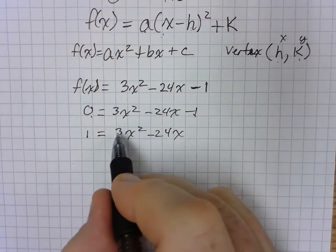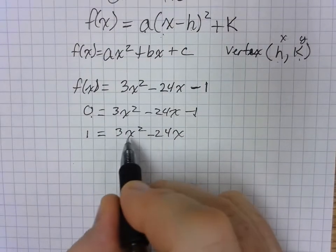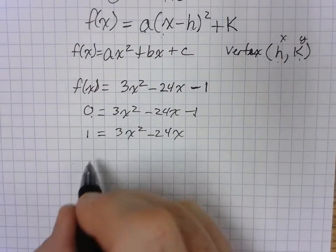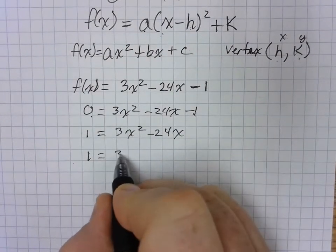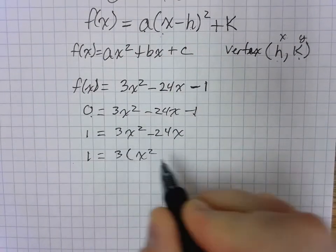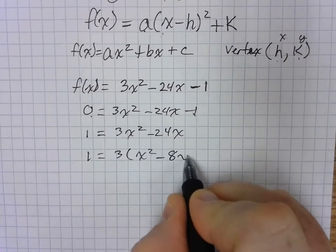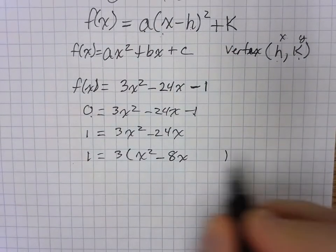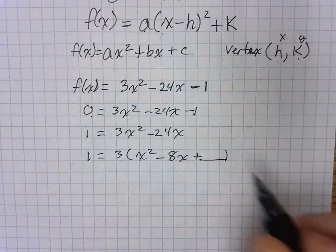Now we need to factor out a 3 because you can't have a leading coefficient other than 1. So we're going to factor out a 3 here. And that will leave us with an x squared minus 8x. And I'm going to leave a little space here because I want to go ahead and complete the square.